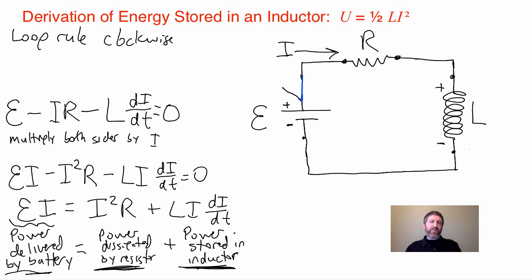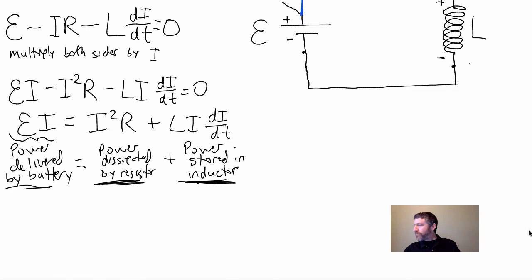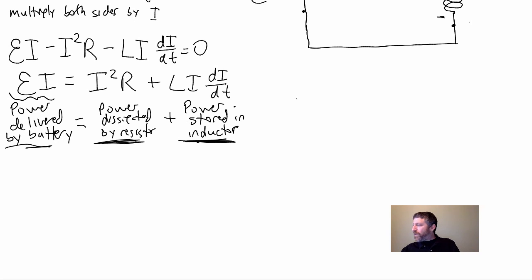The power stored in the inductor is LI dI/dt. So, this is just conservation of energy here. The battery delivers all this power. Some of it gets dissipated. Some of it gets stored. And if you just integrate that by time, you can have the energy delivered, the energy dissipated, and the energy stored. In fact, here's what we're going to do. We're just going to take, we're only going to look at this last term.